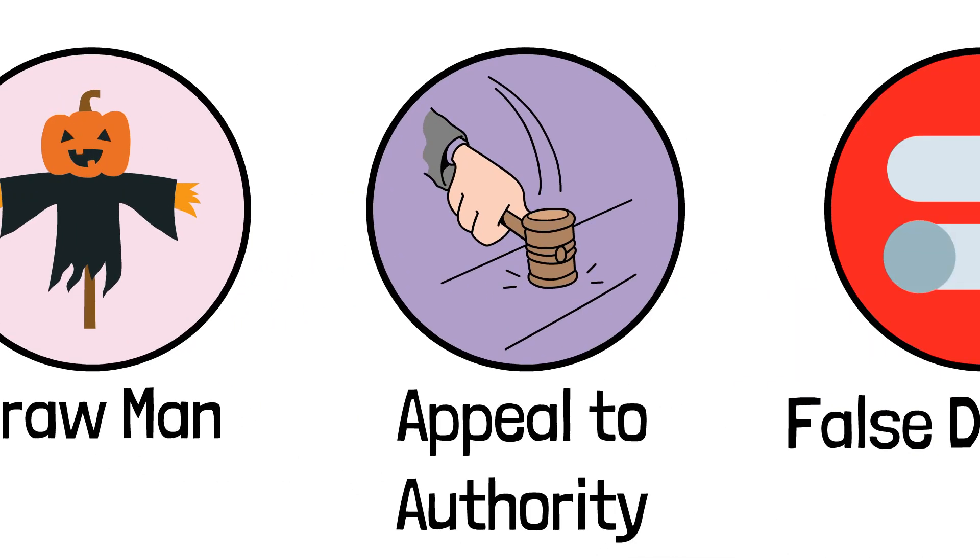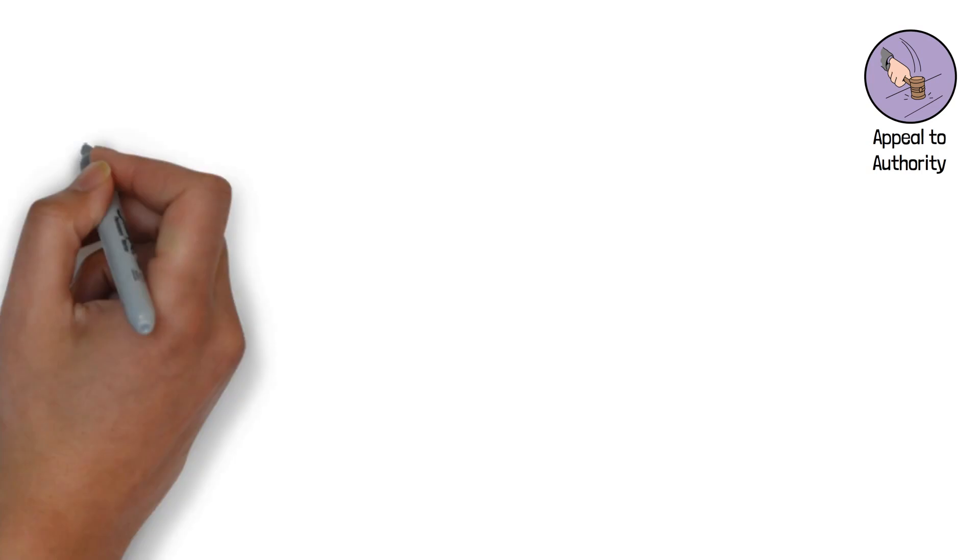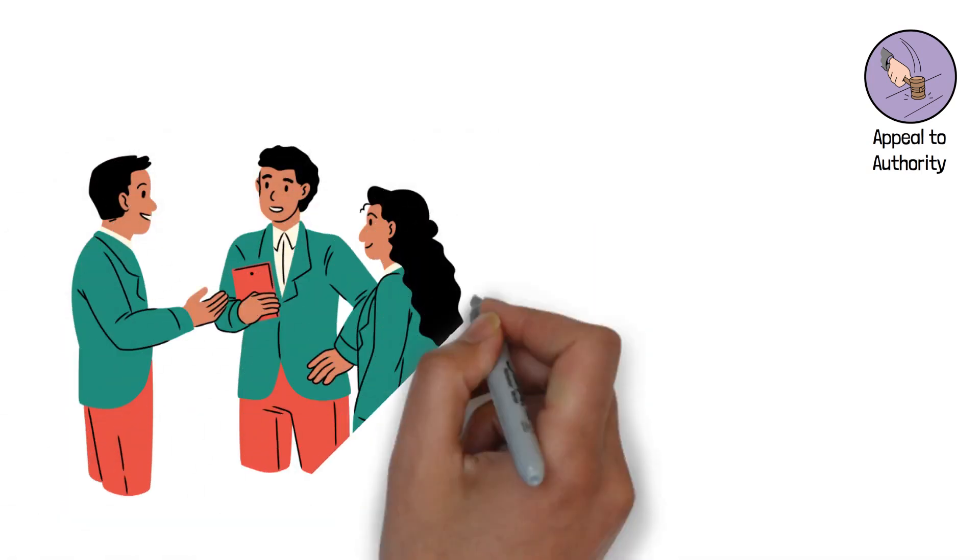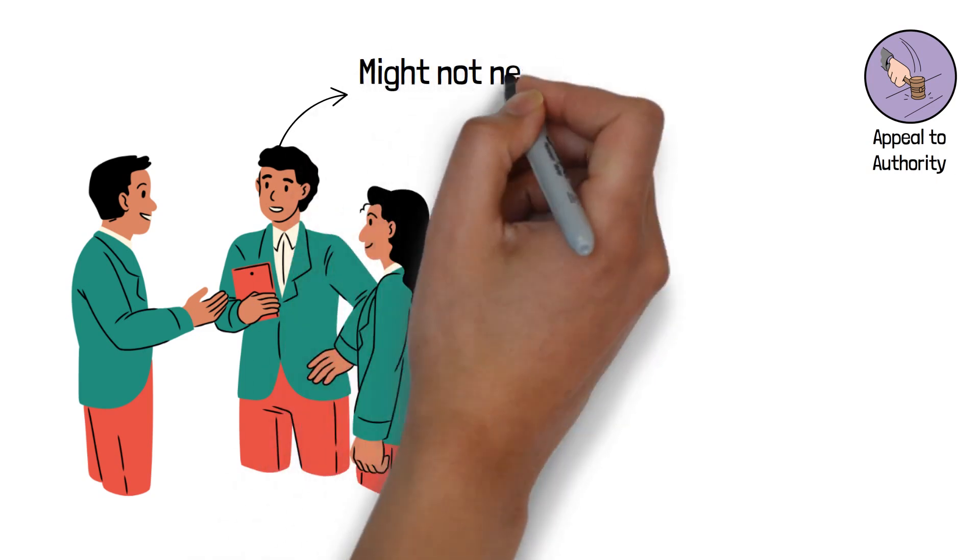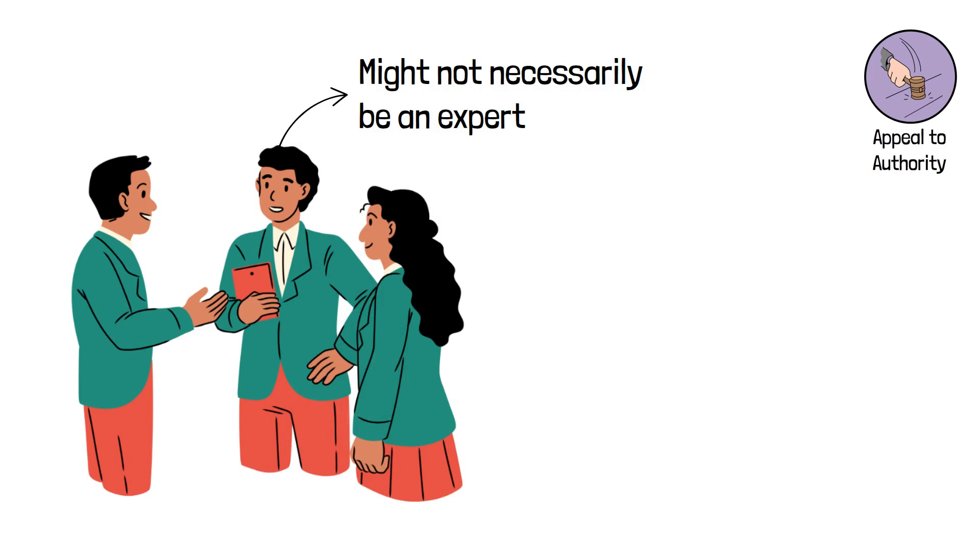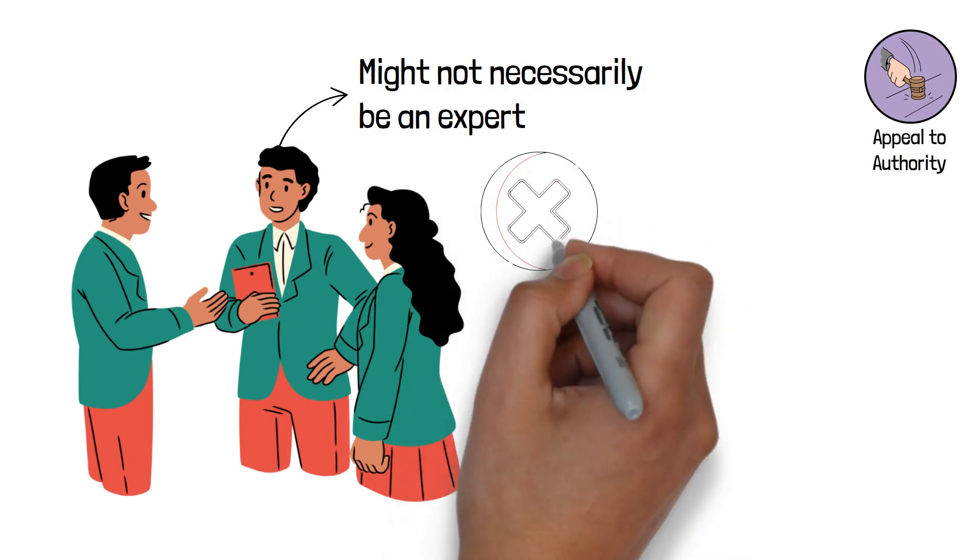3. Appeal to authority. This fallacy occurs when someone uses the opinion or endorsement of an authority figure as evidence to support their argument. However, an authority figure might not necessarily be an expert in the specific area being discussed, so their opinion should not